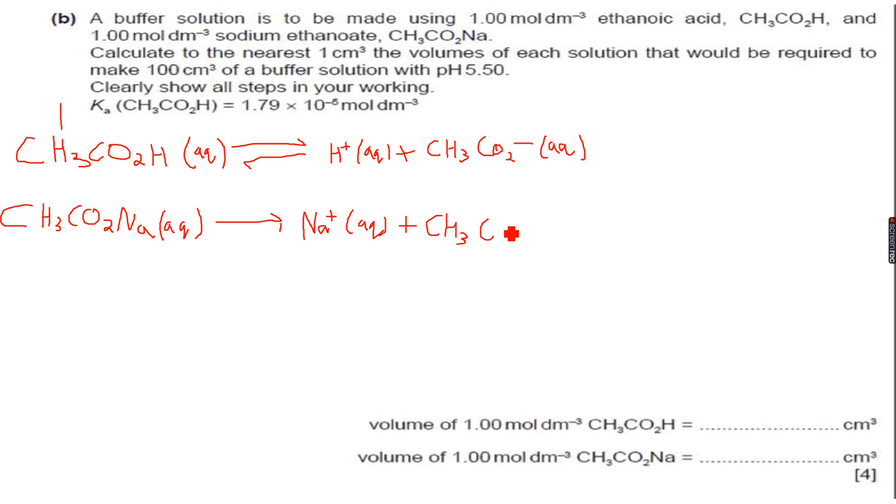So this will completely dissociate to form Na⁺ aqueous ions plus ethanoate ions. This is the reaction taking place. Now we are also given that we have 1 mole per dm³.